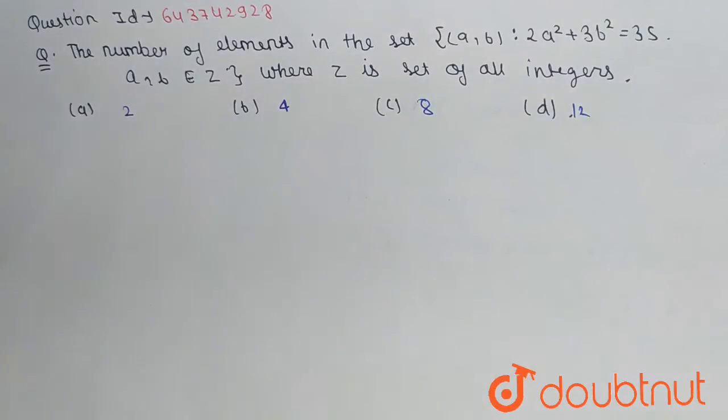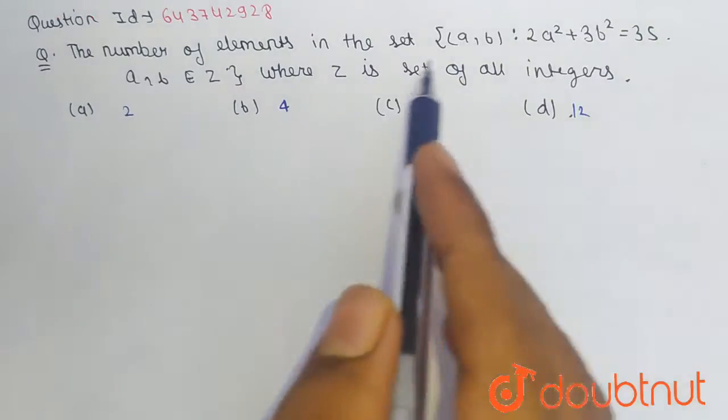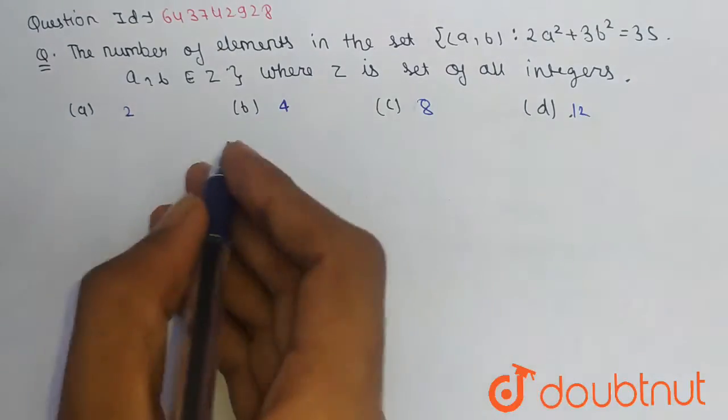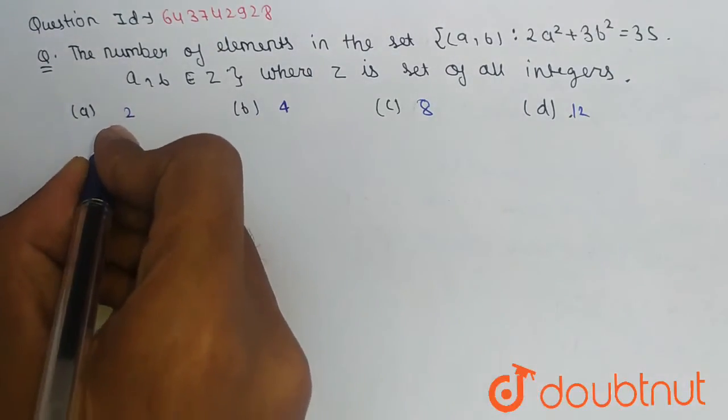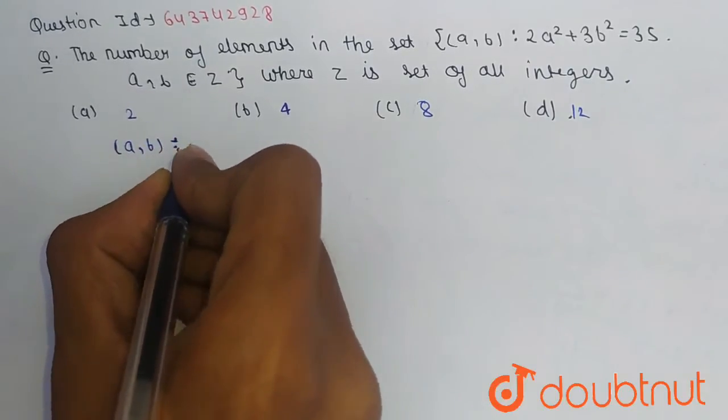is on relation and function, and we have to find the number of elements in the given equation. The options are 2, 4, 8, and 12. So consider, we have given (a, b) is equal to...